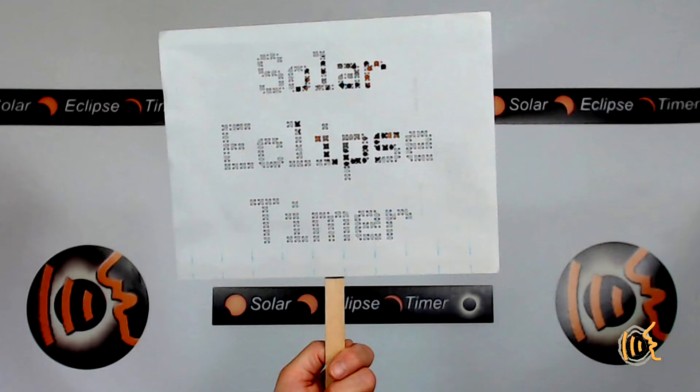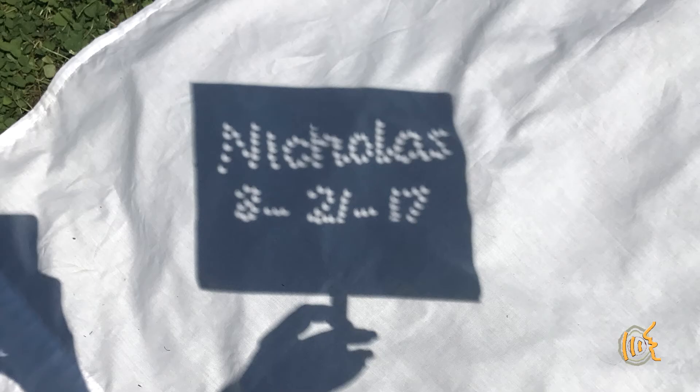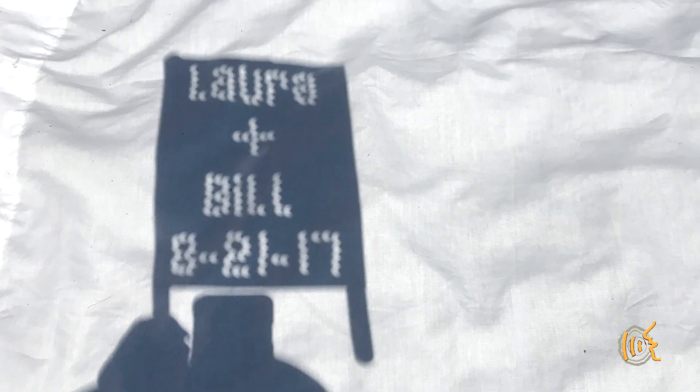Now, if you plan ahead, you can do something really neat. You can punch holes in paper in the pattern of your name and project your name on the ground as crescents. I did it at the last eclipse with the name solar eclipse timer and we did names for the other people in the group. Be creative and do other patterns or shapes.